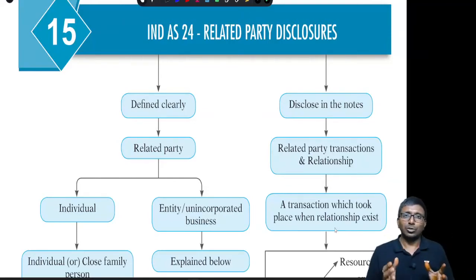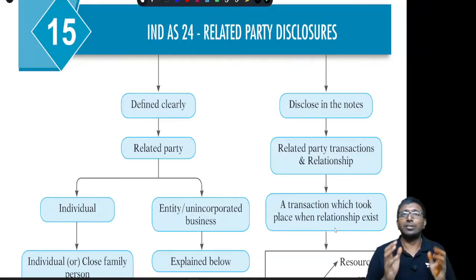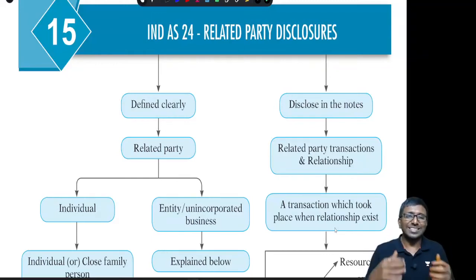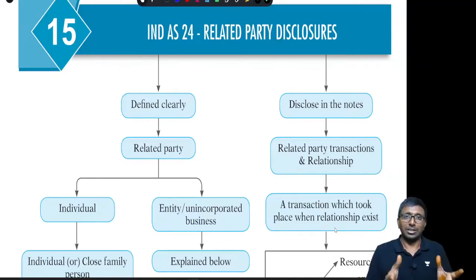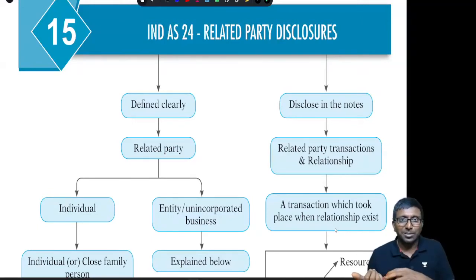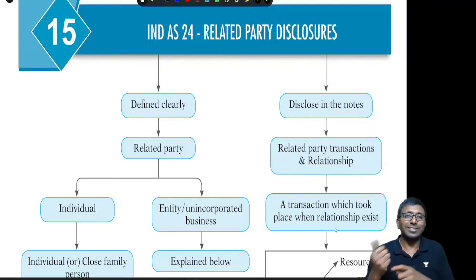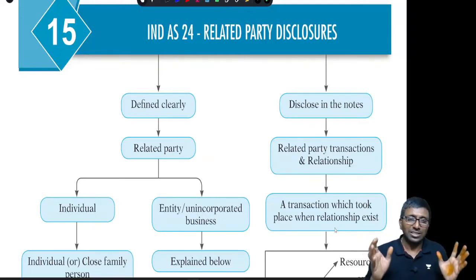Related party disclosure is mandatory even though the transaction takes place at market value, that is arm's length price. If you can prove that it is happening at arm's length price, then you can disclose that the transactions between related parties took place at arm's length price. But just because it is happening at arm's length price, there is no exemption — the company cannot say it doesn't want to disclose.